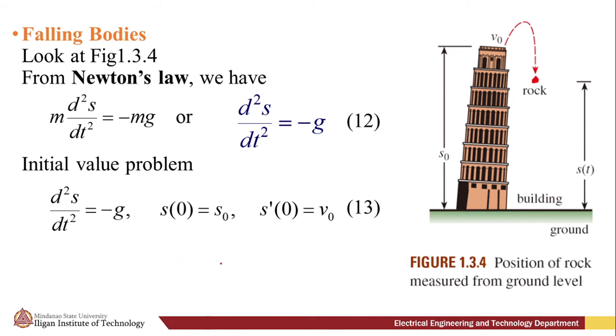Now, suppose a rock is being tossed upward from the roof of a building as illustrated in the figure. What is the position s(t) of the rock relative to the ground at time t? The acceleration of the rock is the second derivative d²s/dt². If we assume the upward direction is positive and no force acts on the rock other than the force of gravity, then we have m(d²s/dt²) = -mg. We have F = ΣF_k, F equals ma, and the summation of forces acting on the body is just the force due to gravity, so we have -mg.